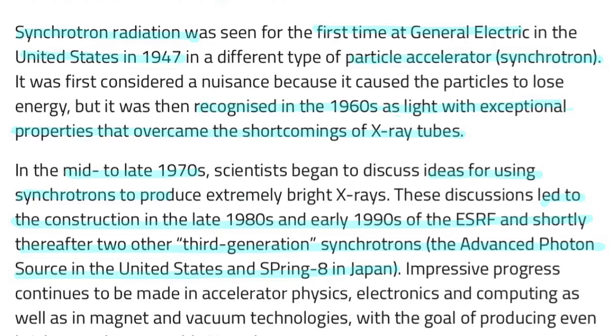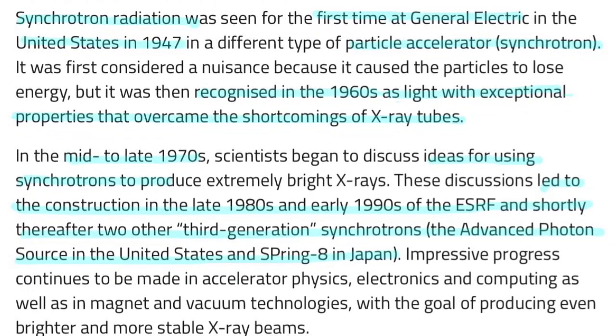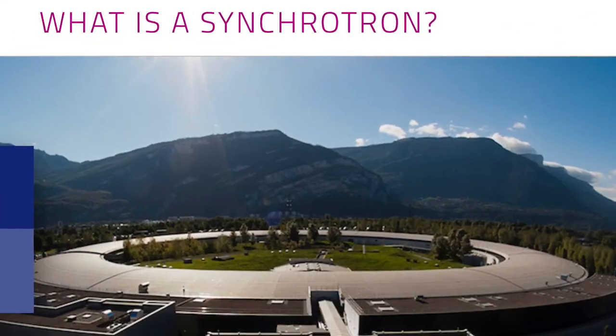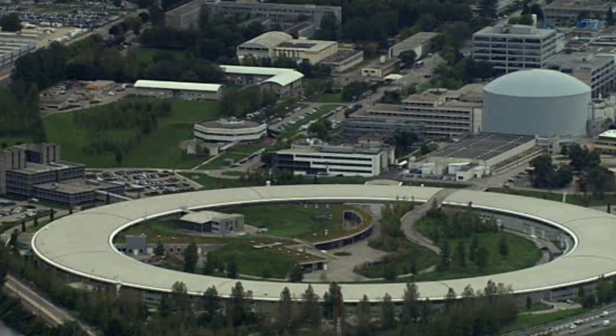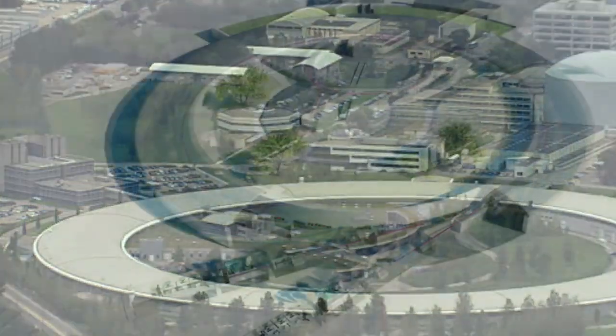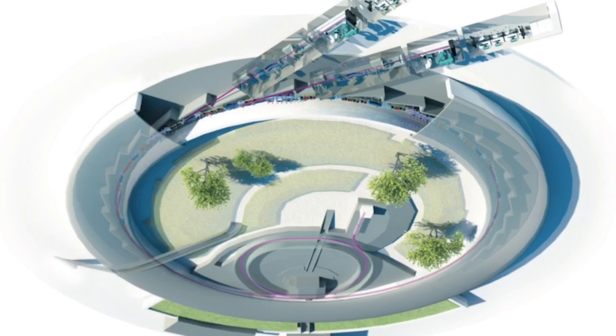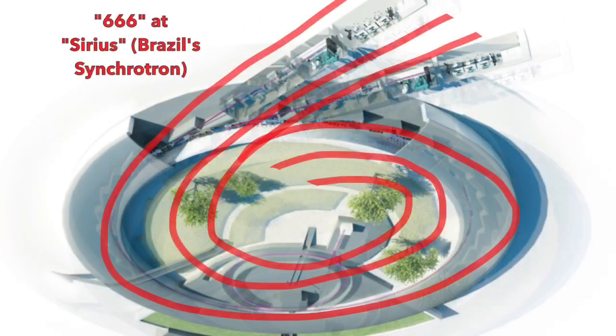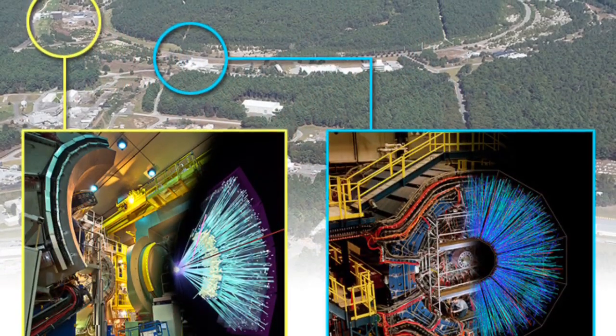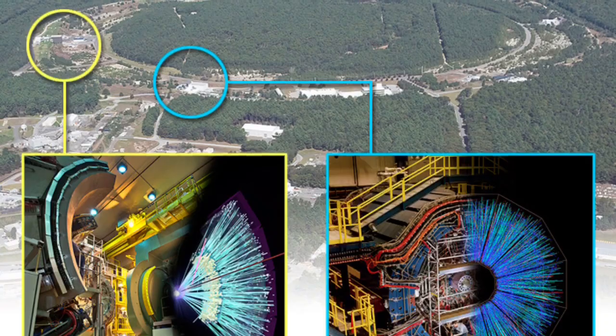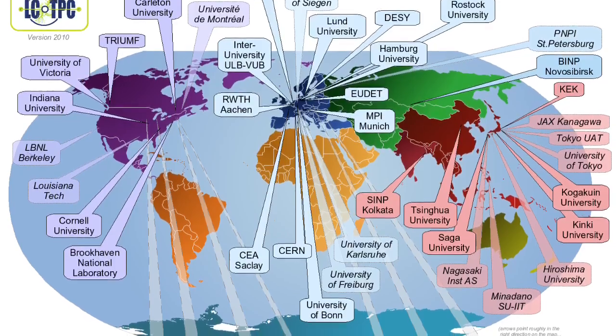Aha. So just about that time they started popping up everywhere in the United States. And so in the mid to late 70s, scientists began to discuss ideas for using synchrotrons to produce extremely bright x-rays. These discussions led to the construction in the late 80s and the early 90s of the ESRF, which is a big one in Europe. And shortly thereafter, the other synchrotrons, which they call the light sources. These are pretty interesting things. And again, actually I've found records of them being built as early as the 40s.